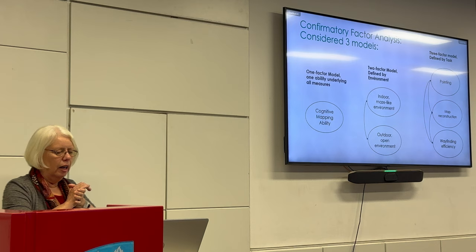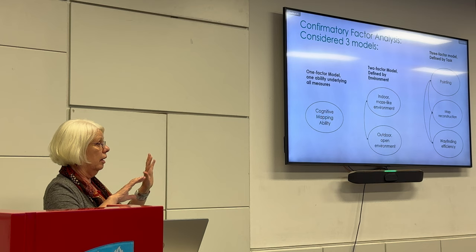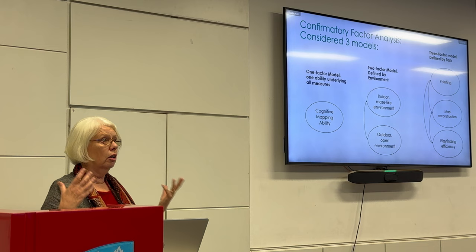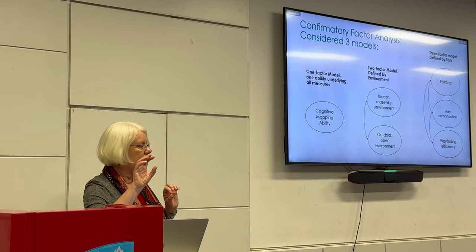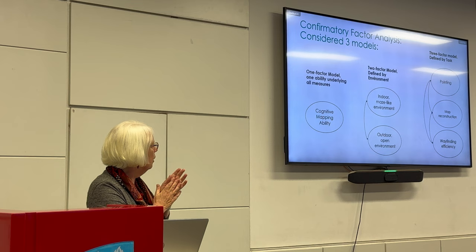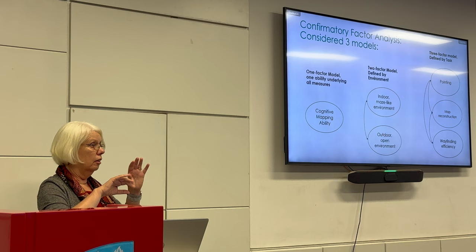The main analysis was a confirmatory factor analysis considering three different models. The first model said all abilities — the three measures for each environment — reflect the same single ability, which we might call cognitive mapping ability. A second model said that learning the indoor maze-like environment is somewhat separable from the ability to learn the outdoor environment. The third model said there might be different abilities related to the pointing measure, the map reconstruction measure, and the wayfinding efficiency measure respectively.